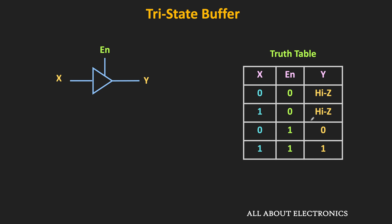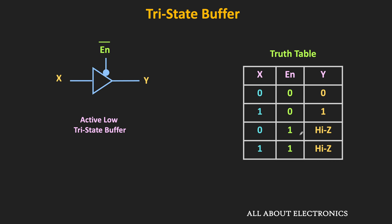The tri-state buffer we discussed so far is the active high tri-state buffer, meaning that when the control input is equal to high, it will act as the normal buffer, and whenever this control input is equal to low, it will operate in the high impedance mode. In case of the active low tri-state buffer, exactly the reverse happens — whenever this control input is equal to 0, the buffer acts as the normal buffer, and whenever the enable input is equal to 1, the buffer remains in the high impedance mode. This is the truth table of the active low tri-state buffer, and if you see the symbol, there is a bubble at the control input.